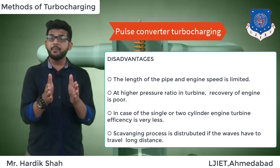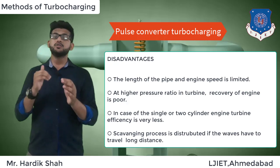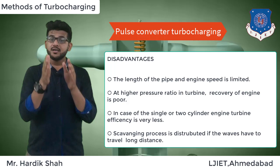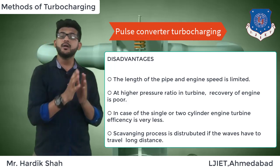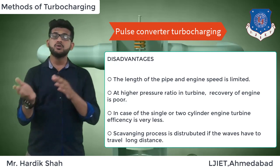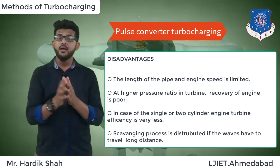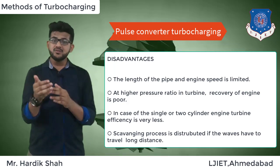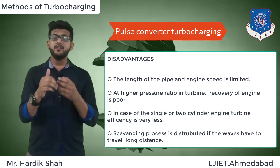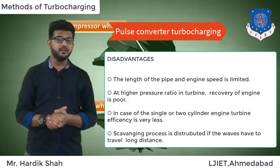The disadvantages of pulse turbocharging are: the length of the pipe and engine speed are limited; at higher pressure ratios, turbine energy recovery is very poor; for single or two-cylinder engines, turbine efficiency is very low; and the scavenging process is disturbed due to pressure waves that must travel long distances through longer pipes.